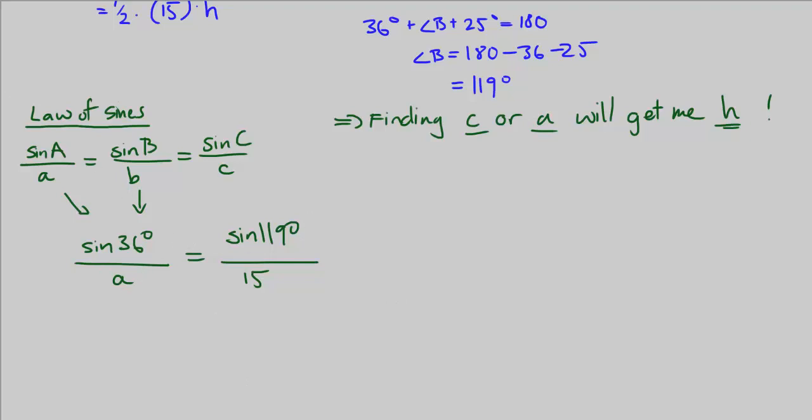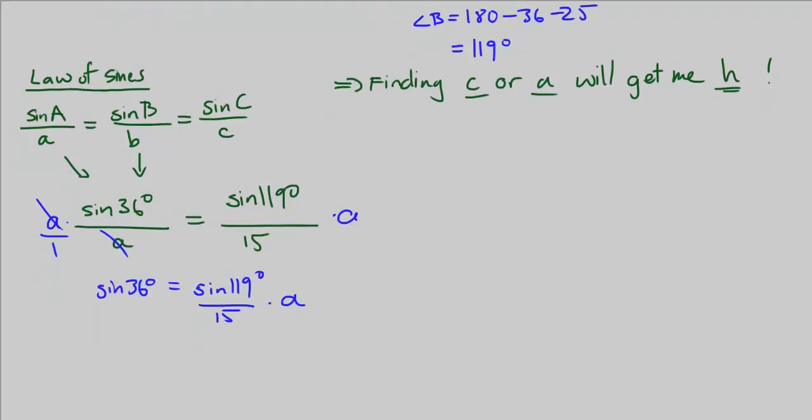I can solve for a. To do that, I need to get out of the denominator. I'm going to multiply both sides by a. That's going to cancel it here. So I'm going to have sine of 36 degrees equals sine of 119 degrees over 15 times a. Now I'm trying to get a alone.